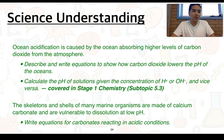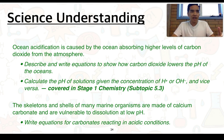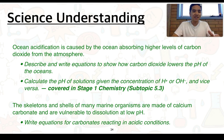In terms of the intended student learnings, we're going to need to describe and write equations to show how carbon dioxide lowers the pH of the oceans. That's something we've actually covered in Stage 1 chemistry, Subtopic 5.3, which is the pH scale — calculating the pH of solutions given the concentration of H+ or OH-, or vice versa. I'll give you a revision or recap, but I'm not going to go through any of the calculations; we'll leave that for class time. And with the second understanding, we'll write equations for carbonates reacting in acidic solutions.